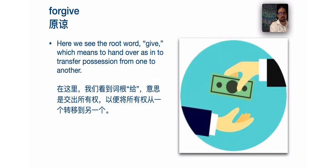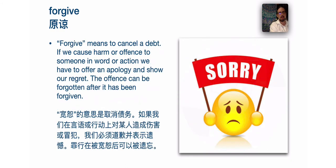The next word is forgive. Here we see the root word give, which means to hand over — to transfer possession from one to another. Forgive means to cancel a debt. Give means to transfer possession; forgive means to cancel any kind of debt. If we cause harm or offense to someone in word or action, we have to offer an apology to show our regret. The offense can be forgotten after it has been forgiven.